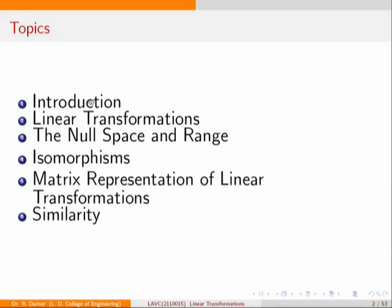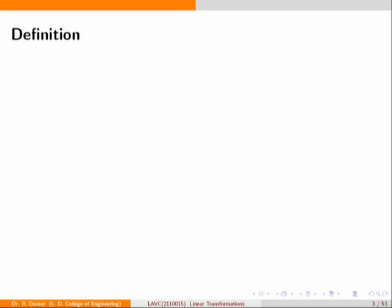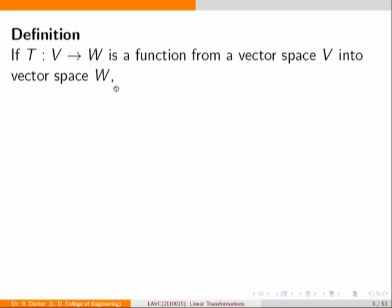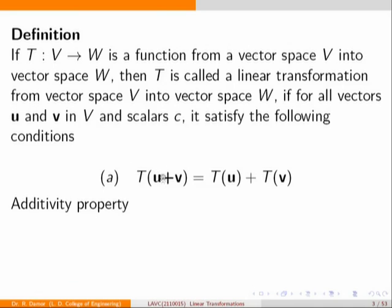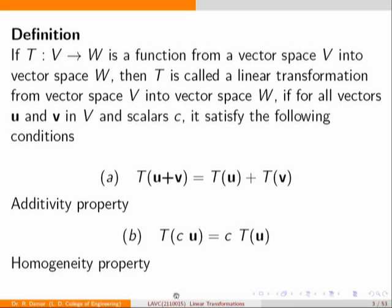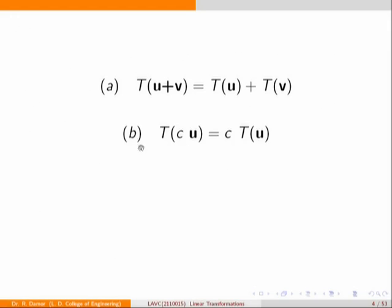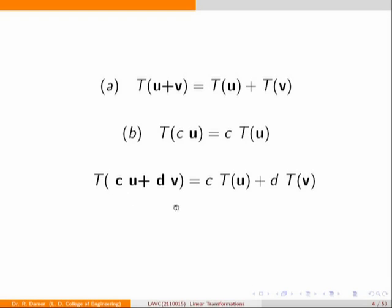We are recalling three things completed in the last four lectures. The definition of a linear transformation: a transformation T from vector space V to vector space W satisfying the additive property and the homogeneous property. These two properties combined make it a linear transformation. If V equals W, the transformation is called a linear operator.